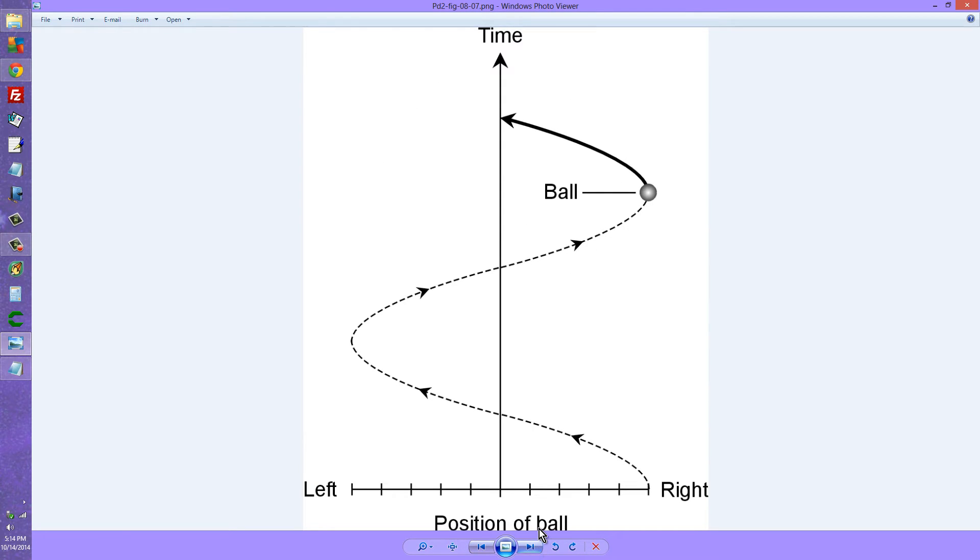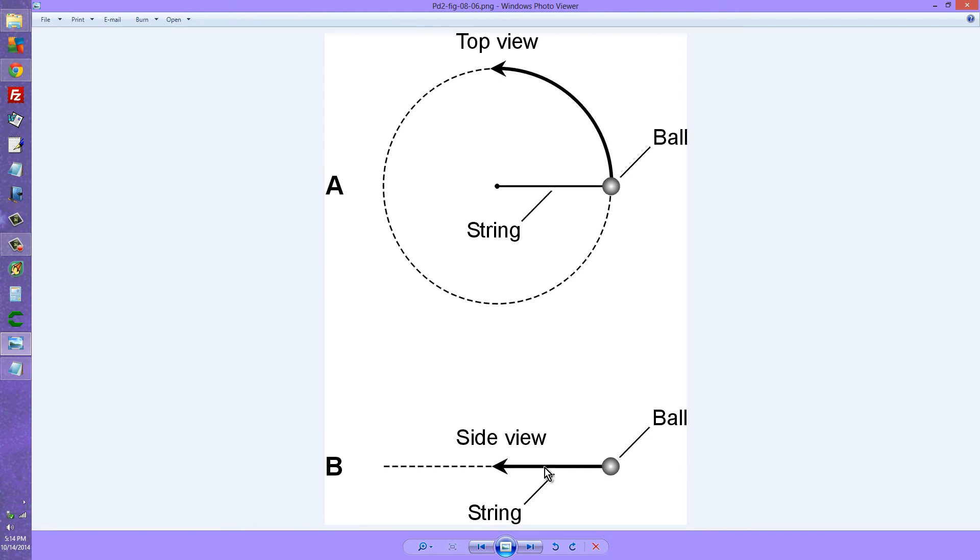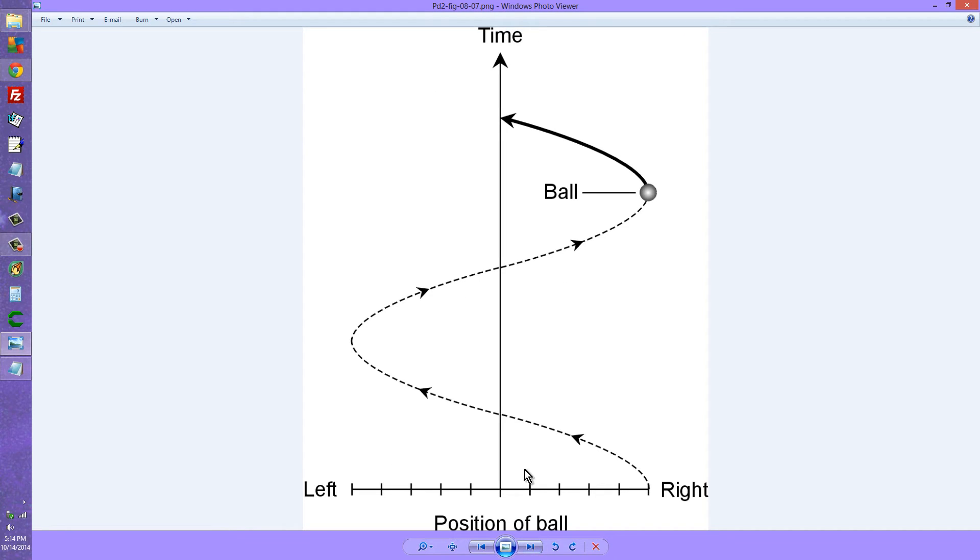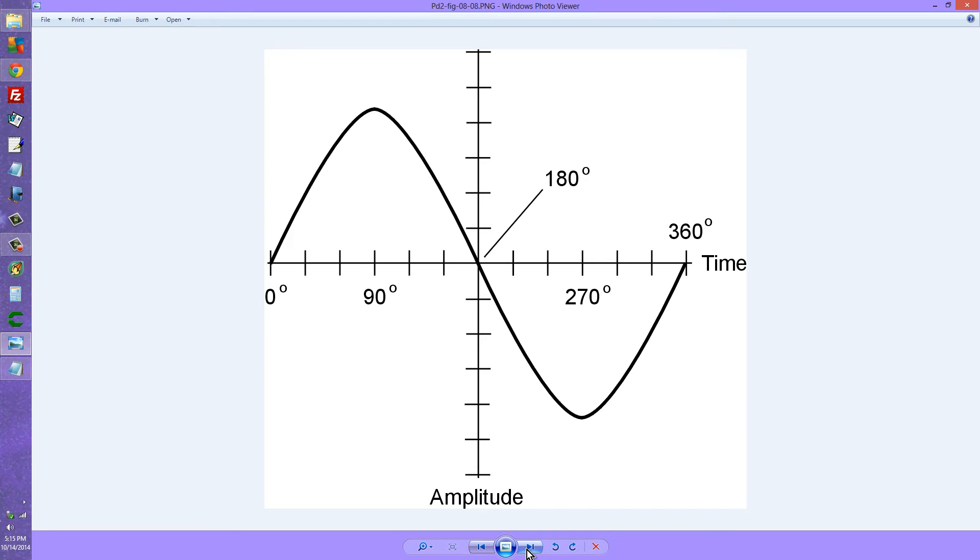Suppose now that you graph the position of the ball along this horizontal axis here as a function of time going up like that. What you're going to get is a wave. Now that's assuming that you maintain a constant angular speed for the ball. It's going to look like a wave, a smooth continuous wave as time goes from past to present and into the future. It kind of looks like a sine wave, doesn't it? A sinusoid. And indeed it is!